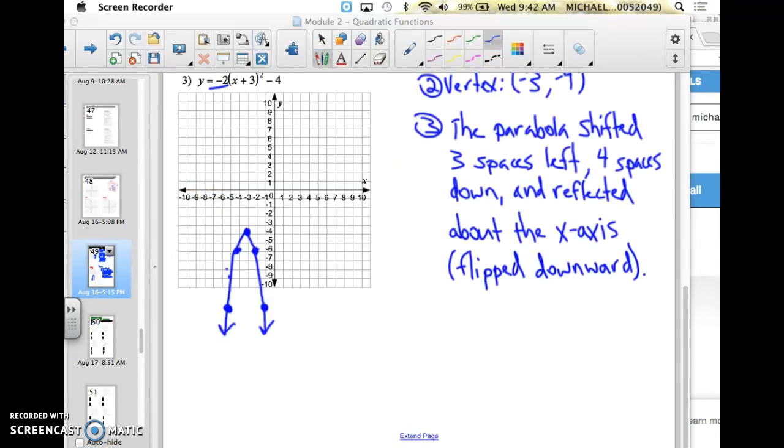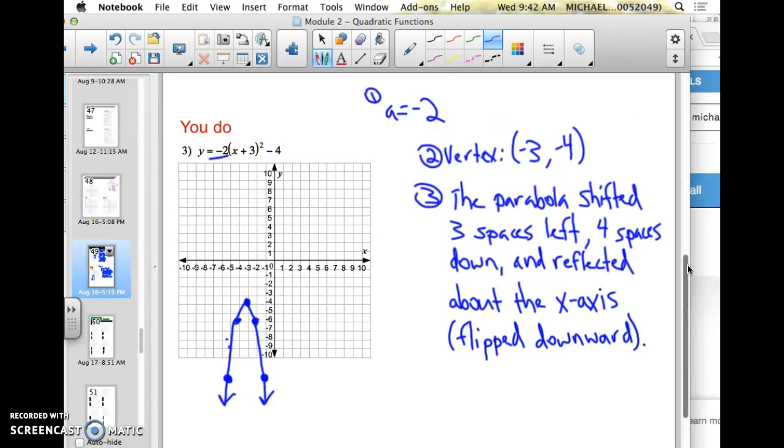Now, at this point you should have tried this example on your own. I have stated that the a-value is negative 2, the vertex is negative 3 comma negative 4, and I have drawn the function. I plotted the vertex, and then I went over 1. Instead of going up 2, I went down 2, to both of these.